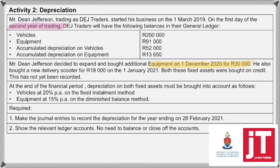Mr. Dean Jefferson decided to expand and bought additional equipment on the 1st of December 2020 for $30,000. And he also bought a new delivery scooter for $18,000 on the 1st of January 2021. Both of these assets were bought on credit, and this has not yet been recorded. That's very important, because if it's not yet recorded, we need to go and record this in our books.